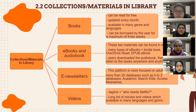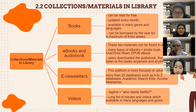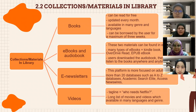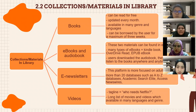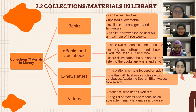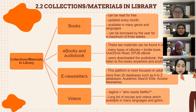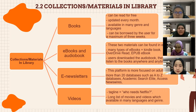For the collections and materials in this library: first, books can be read for free; they are updated every month, available in many genres and languages, and can be borrowed for a maximum of three weeks. Next, ebooks and audiobooks can be found in the eZone application — types include Kindle books, OverDrive, and free EPUB ebooks. Users can also download audiobooks and listen anywhere at any time. Next, the e-newsletter platform is more focused on adult users, with more than 20 databases such as A to Z databases, Academic Search Elite, and Access Newswire. Lastly, videos — the tagline for the website is 'Who needs Netflix?' — showing a long list of movies and videos available in many languages and genres.